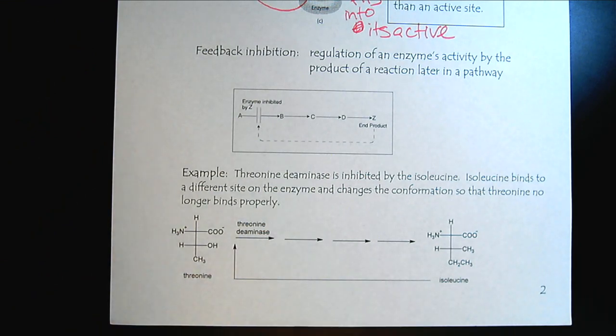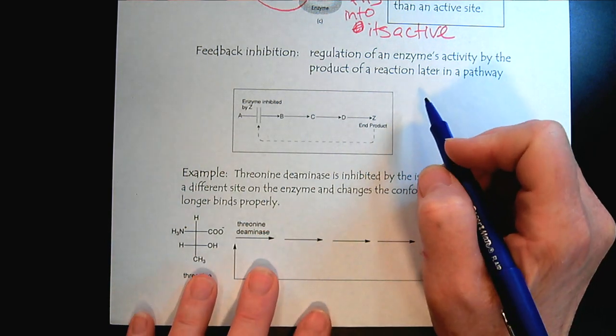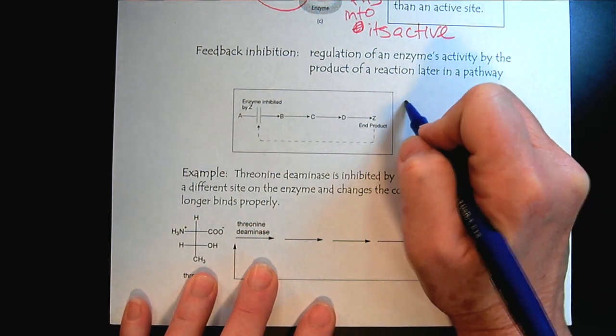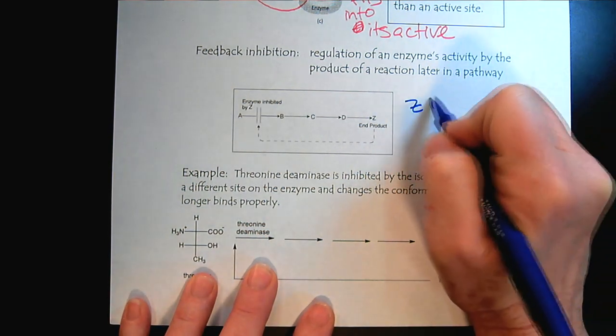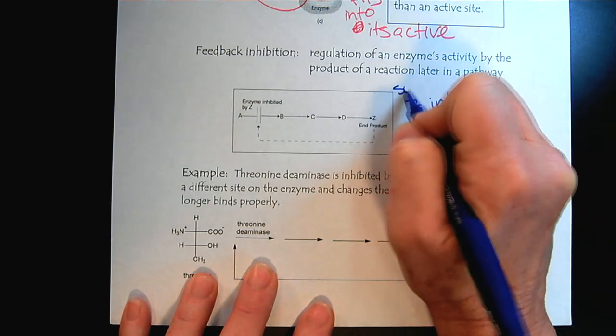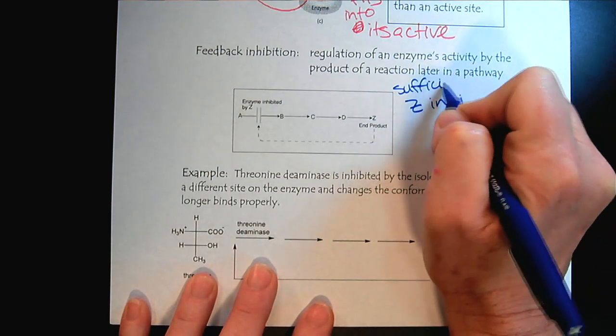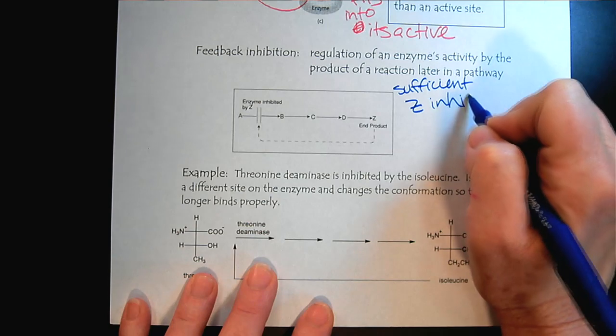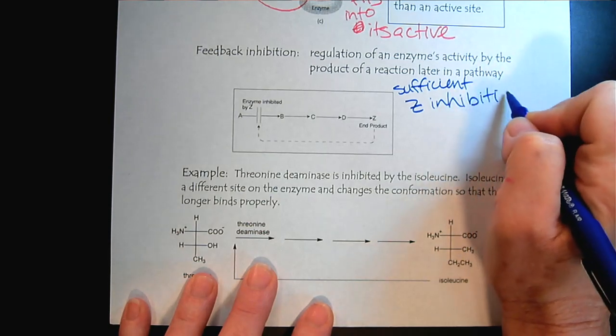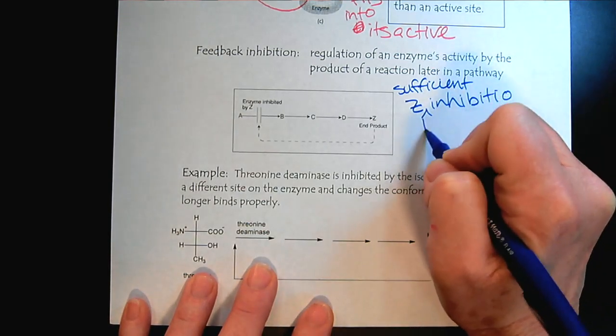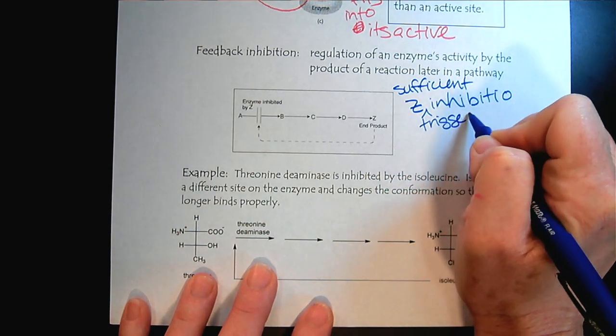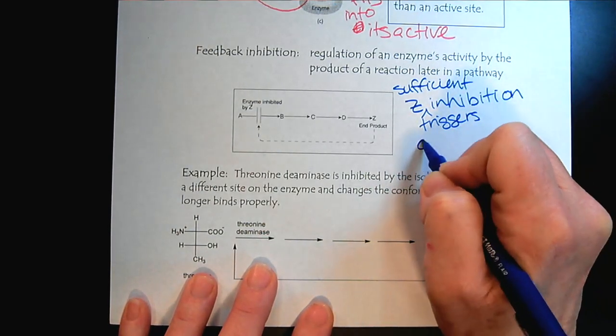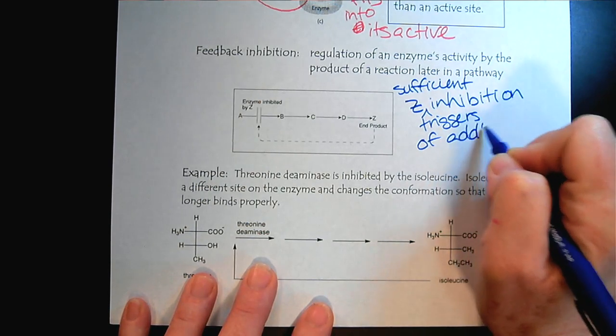And maybe I should be a little more explicit here. So basically, so sufficient Z will then cause inhibition. Then Z triggers inhibition of additional production.